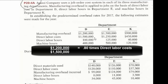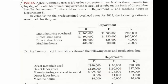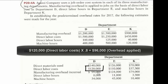We divide $1,200,000 by $1,500,000 — the dollar signs cancel and we get 80%. That's the annual rule. Then for January, we take our direct labor costs of $120,000, multiply by 80%, and apply $96,000 of overhead into work in process.